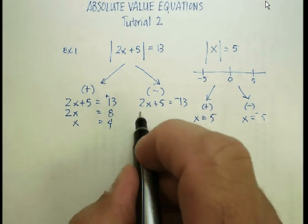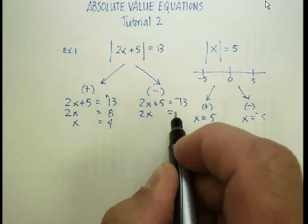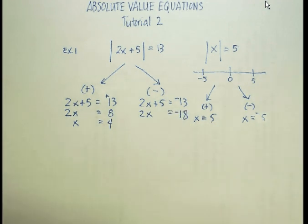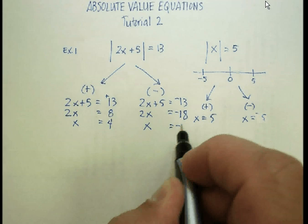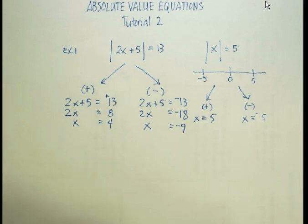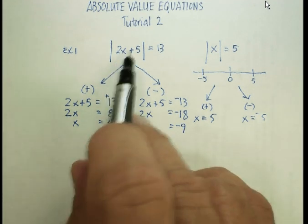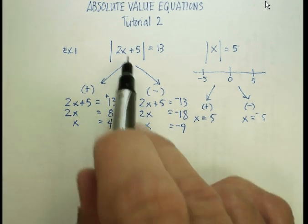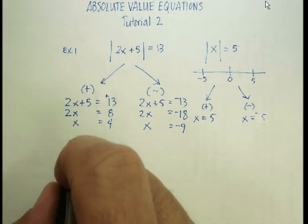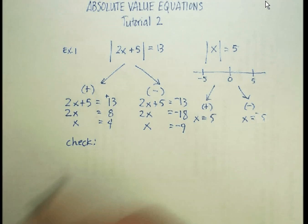So let's try this side. Let's subtract five, and look what I get. I get a negative 18. Let's divide by two. I get a negative nine. So according to this, if I put four in here, I'll get 13. If I put a negative nine in here, I'll get 13. And let's check to see if that's true.